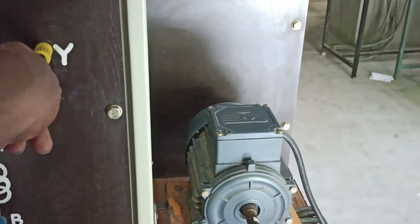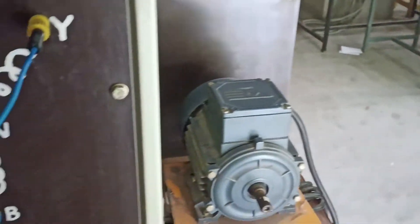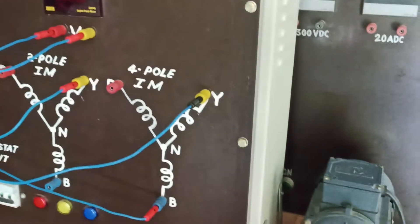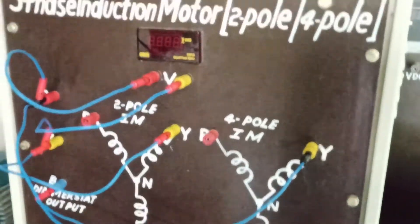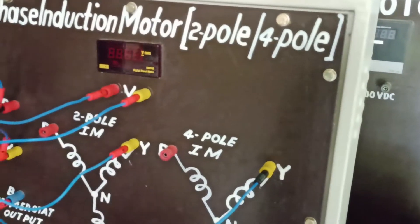Similarly, you can do it for the four-pole motor. For a four-pole motor, you'll be getting a speed of 1500 RPM.